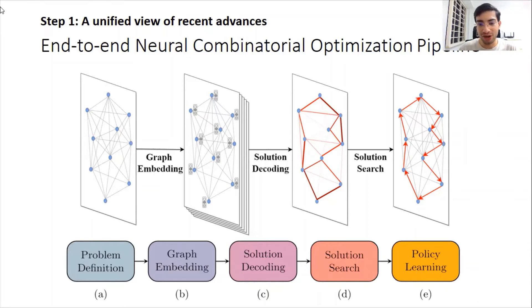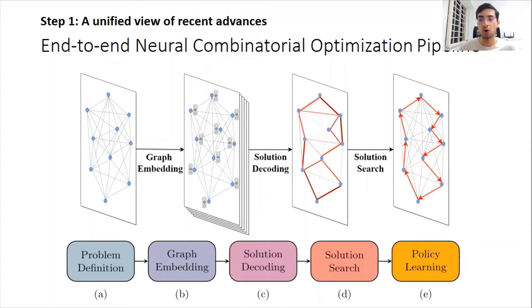The final part is to learn the neural network solver. This can be done via supervised learning, where we learn to imitate solutions from something like Concorde, which is close to optimal. Or we can use reinforcement learning, defining some cost function which we then minimize using RL.